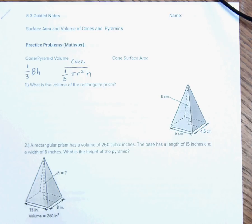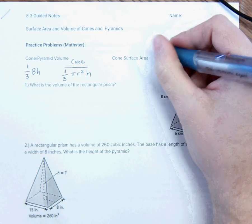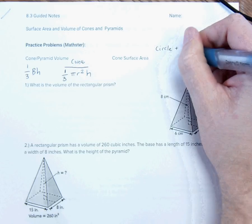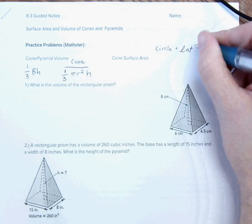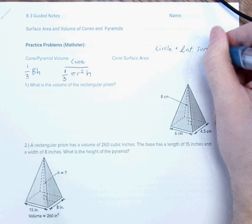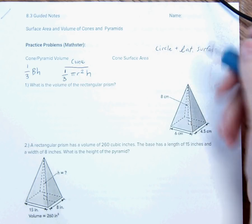And then the surface area, which I talked about where this came from, the net of a cone is a circle plus its lateral surface, its curved surface area.